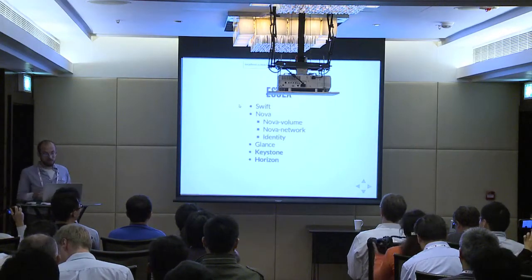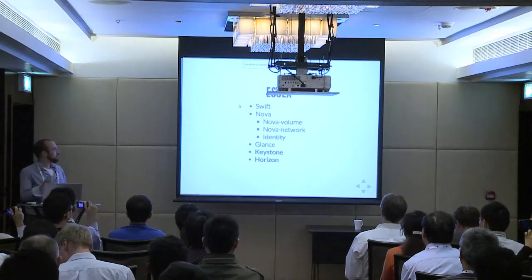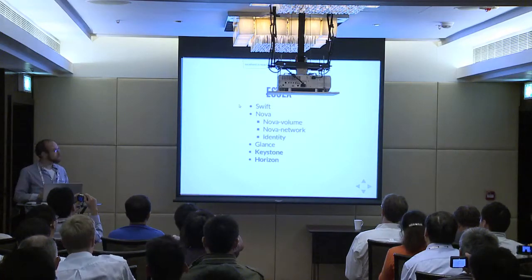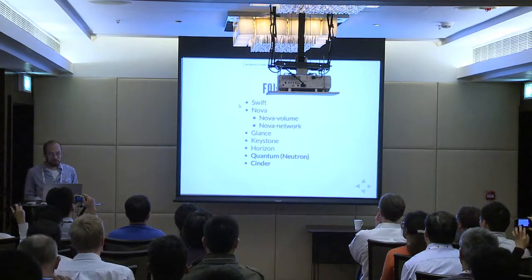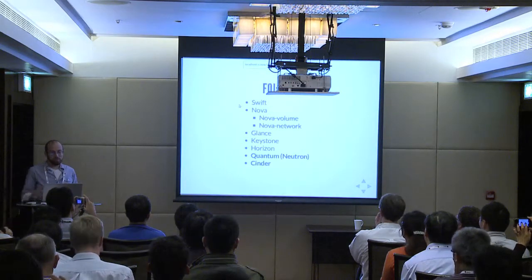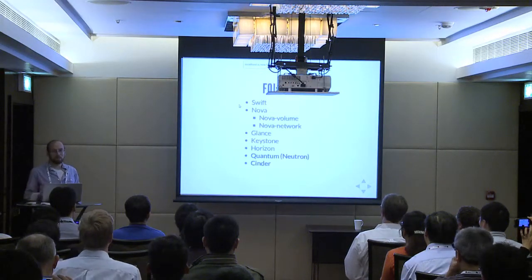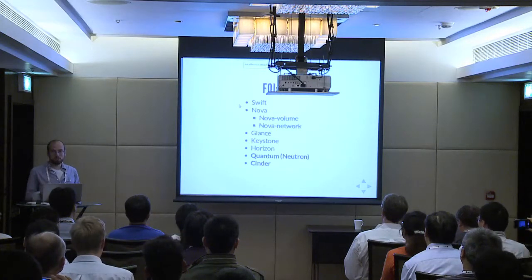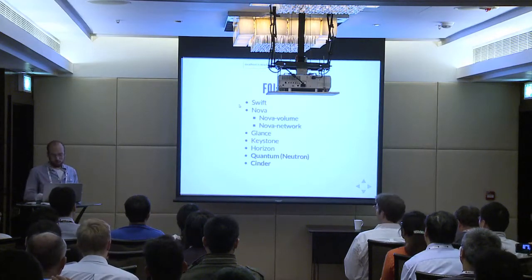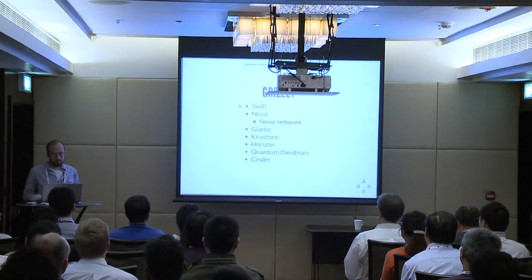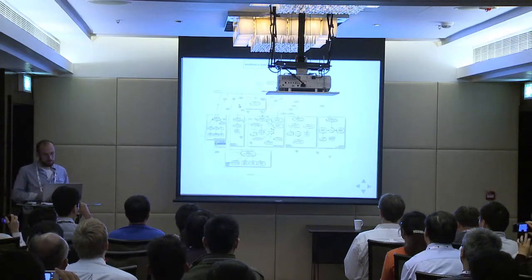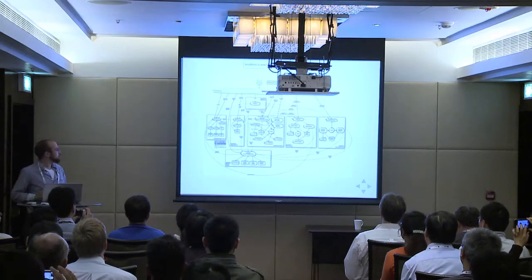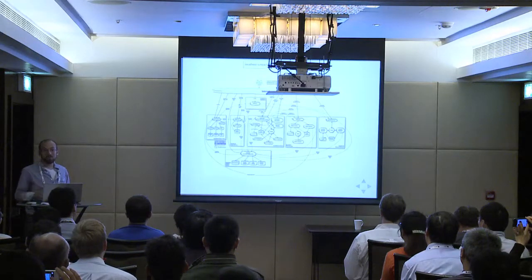Next came Essex: we added Keystone and Horizon and got rid of Identity in Nova because it didn't really belong there. Folsom came along and we added Quantum and Cinder, so we got rid of Nova Network and Nova Volume — although Nova Network is still there and Quantum is still trying to get rid of Nova Network. Grizzly, we didn't do too much more; we just kept working on what we had. And now it's nice and big and complex, and it's only getting bigger and more complex.